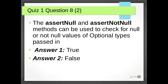Quiz 1 Question 8: The assertNull and assertNotNull methods can be used to check for null or not null values of Optional types passed in. Answer 1: True. Answer 2: False. The correct answer is 2, False.